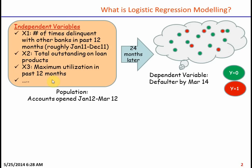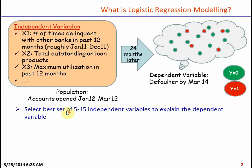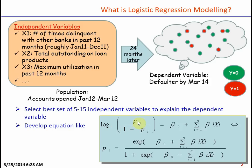In logistic regression modeling, you select 5 to 15 independent variables from a large list and develop an equation: log(probability of 1 / probability of 0) — that is, log odds — equals intercept plus the sum of bi times xi, where xi is the independent variable and bi is its coefficient. Ultimately you are calculating the probability of 1.